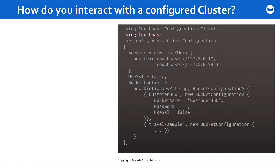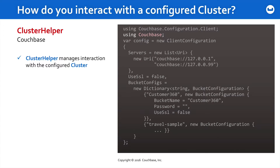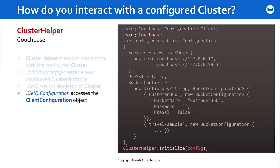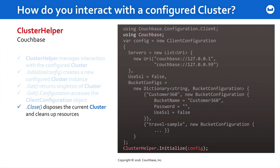So how do you interact with a cluster once it's configured? That's all done through the ClusterHelper class, which manages your interaction with a configured cluster. To initialize the connection itself, you pass the config object off to the Initialize method of ClusterHelper and that will set up the connection. There are methods available like Get to return a singleton of the cluster, which means you could get to the configuration property of your cluster to access the ClientConfiguration object at runtime. There's also a Close method to dispose of the current cluster and clean up resources.